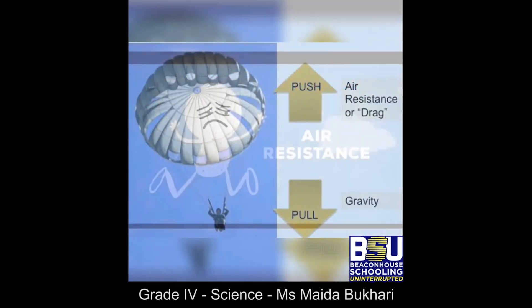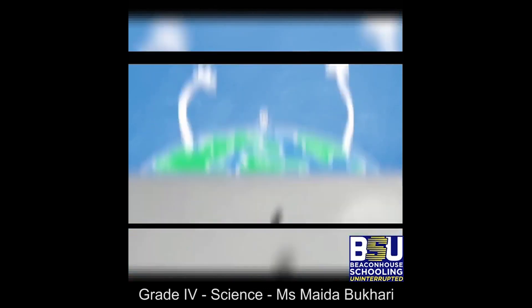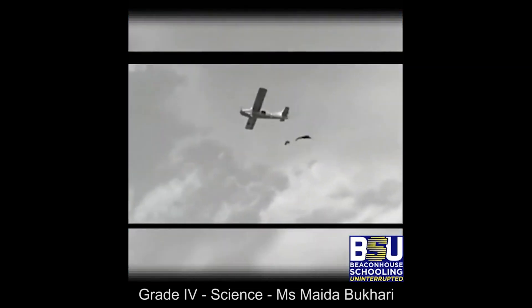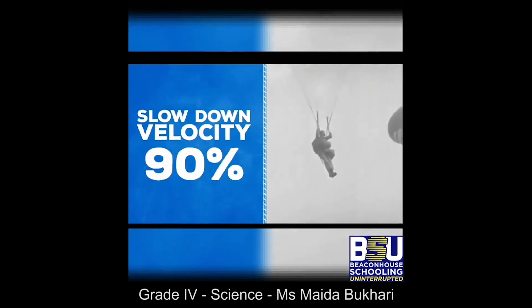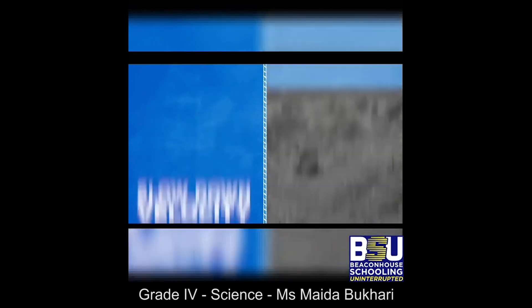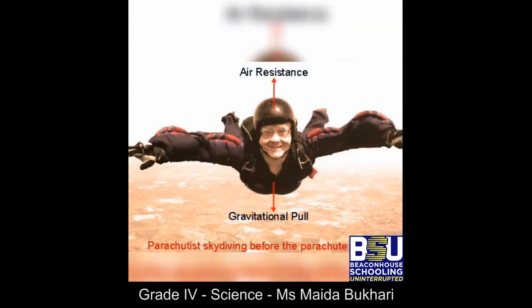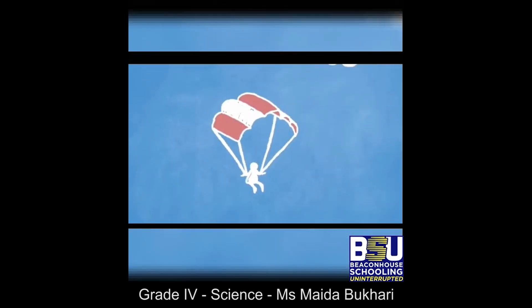An object falls to the ground because of gravity. Someone jumping out of an airplane in mid-air will fall with great speed toward the ground. A parachute can slow down their fall and help them land safely. A parachute slows the skydiver down because it causes air resistance — the air pushes the parachute upward, creating a force opposite to gravity.